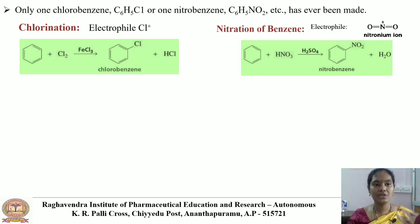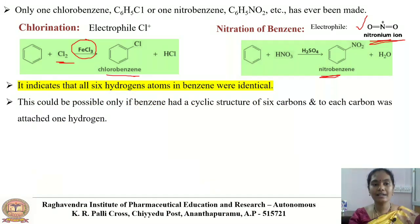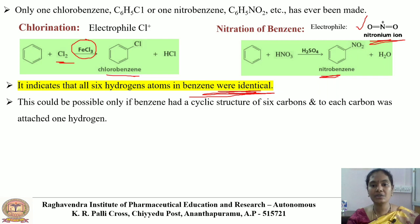When benzene reacts with chlorine in the presence of the Lewis acid catalyst FeCl3, it forms chlorobenzene. For nitration, benzene reacts with HNO3 in the presence of H2SO4 to form nitrobenzene; the electrophile here is the nitronium ion. With these synthetic evidences, it is indicated that all six hydrogen atoms in benzene are identical, which is only possible if benzene has a cyclic structure of six carbons with one hydrogen attached to each carbon, making monosubstitution possible.